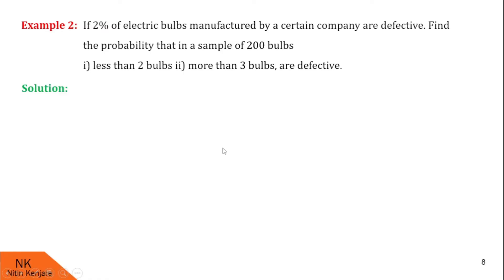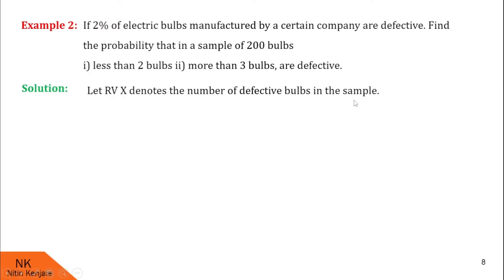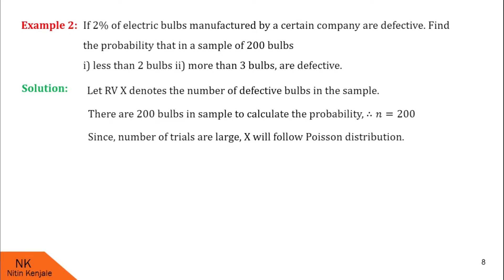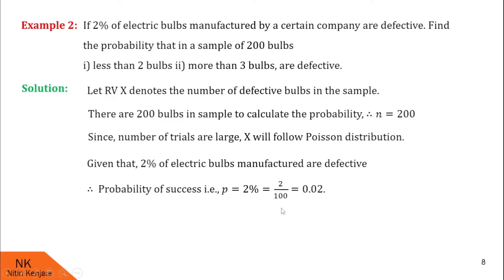Let us proceed for the solution. We define a random variable x to denote the number of defective bulbs in the sample. Since a sample of 200 bulbs is under consideration, here n will be equal to 200. Since n is too large, x follows Poisson distribution. It is given that 2% of electric bulbs are defective, so probability of success p is 2%, that is 2 by 100, that is 0.02.